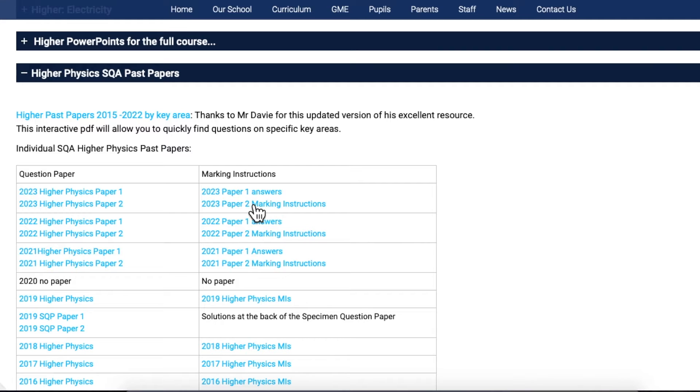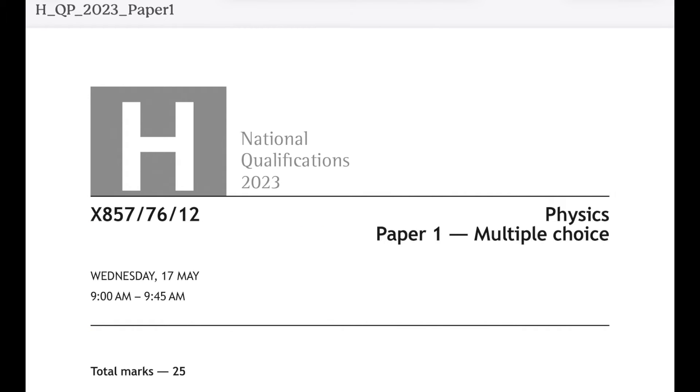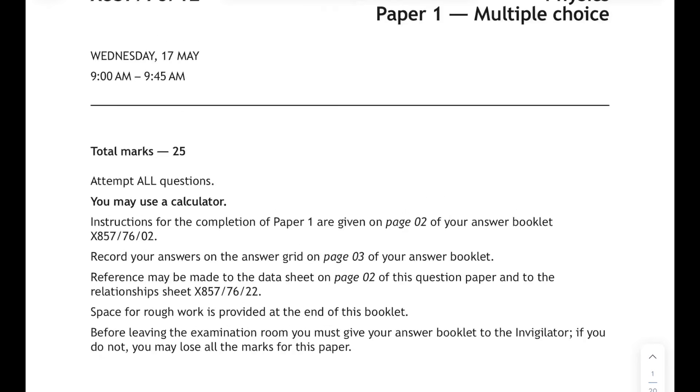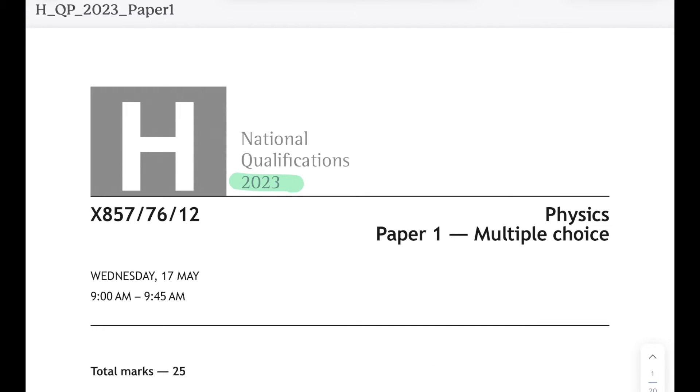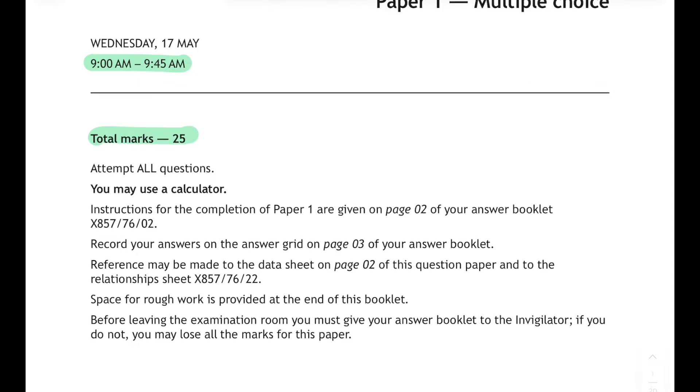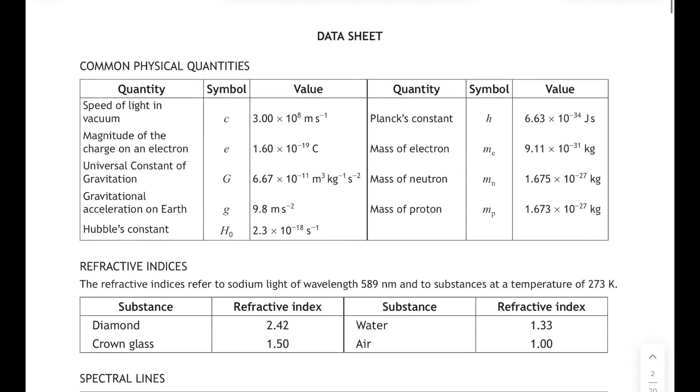The marking instructions are there as well but the thing about multiple choice marking instructions is it tells you the answer, doesn't show you how to do the question. So hopefully we'll do that in this video - we'll give you a little walkthrough of the 2023 higher physics multiple choice paper. Now you get 45 minutes to do the paper and it's 25 marks.